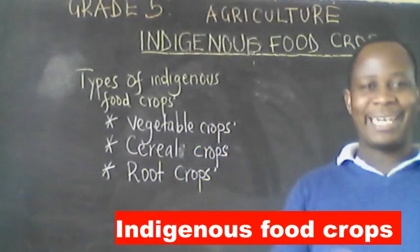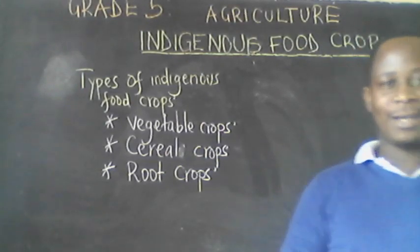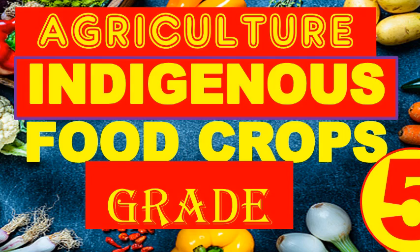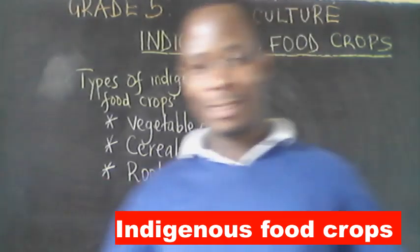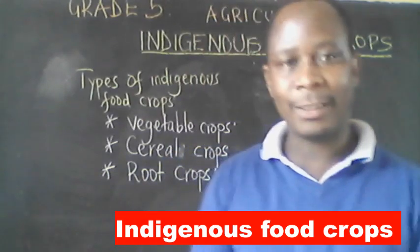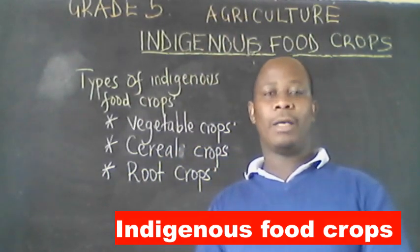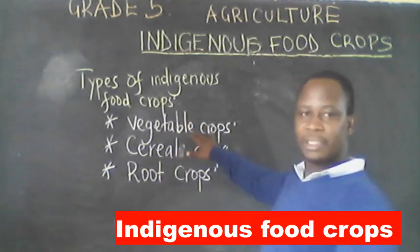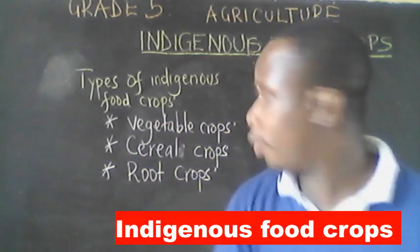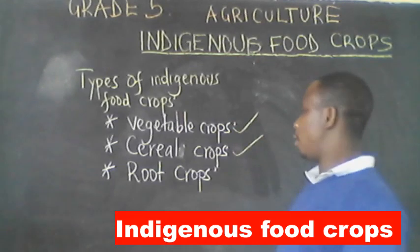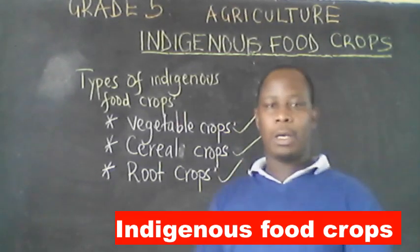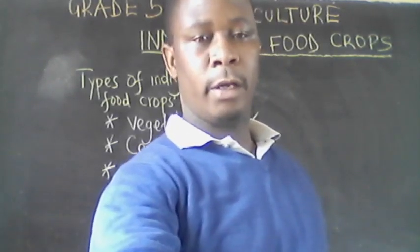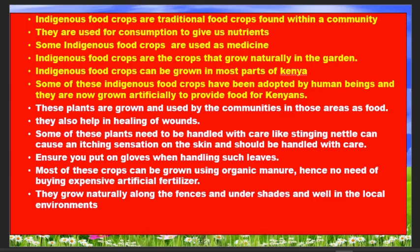Welcome to this lesson. Today we are going to learn about indigenous food crops in agriculture. Indigenous food crops are the traditional food that we eat. In this lesson we will look at the various types of indigenous food crops. We have three types: vegetable crops, cereal crops, and root crops. Indigenous food crops are traditional foods found within our community, consumed to give us nutrients.